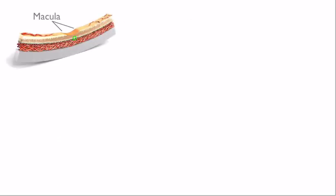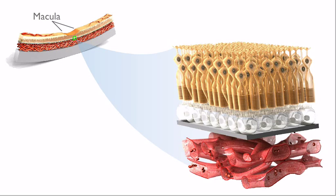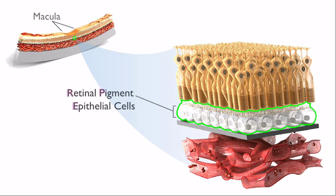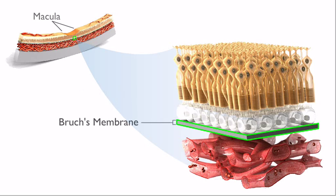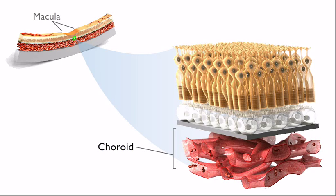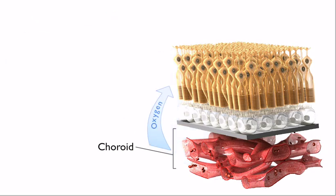The macula is composed of several layers of specialized cells. The photoreceptors sit atop a layer of cells called retinopigment epithelial cells, RPE. Underneath these layers is a thin lining called Bruch's membrane. Beneath Bruch's membrane is the choroid, a network of blood vessels that provide oxygen and nutrients to the macula.